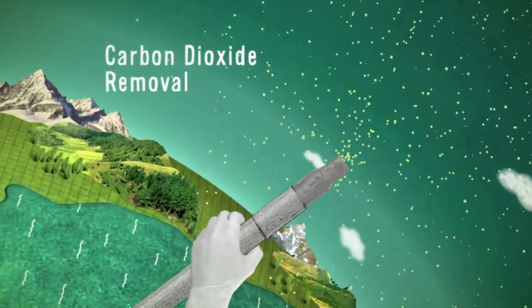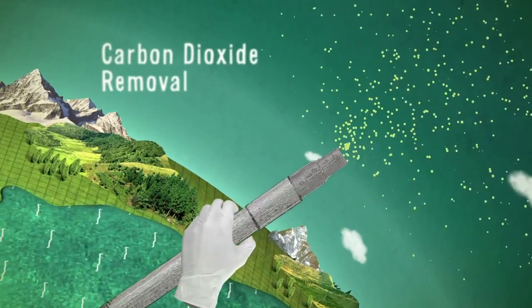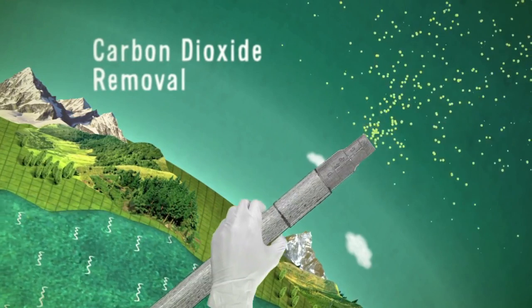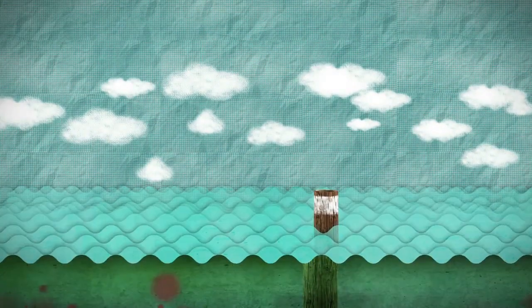Carbon dioxide removal involves activities whereby the greenhouse gas carbon dioxide is separated out from the atmosphere. In regard to this second option, climate scientists have proposed that the oceans could be used to absorb and store even more carbon dioxide than they already do.